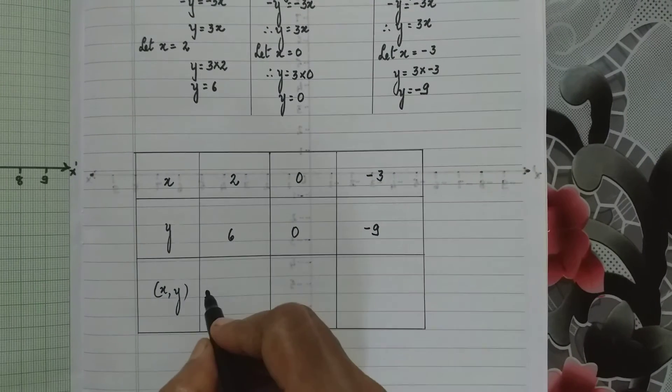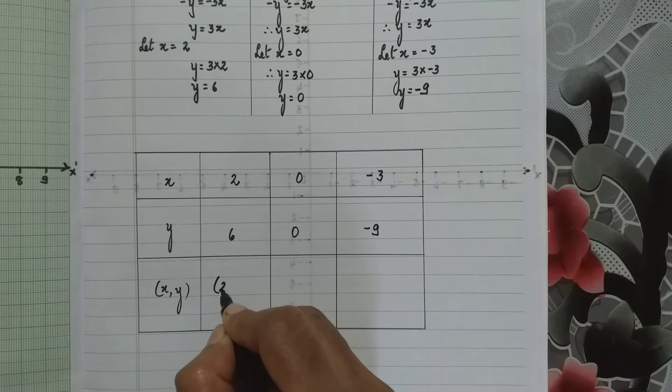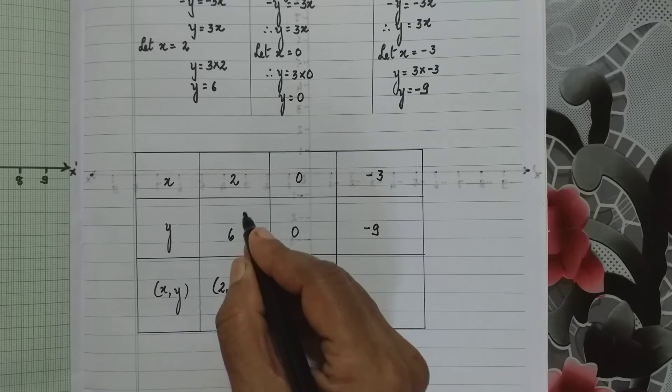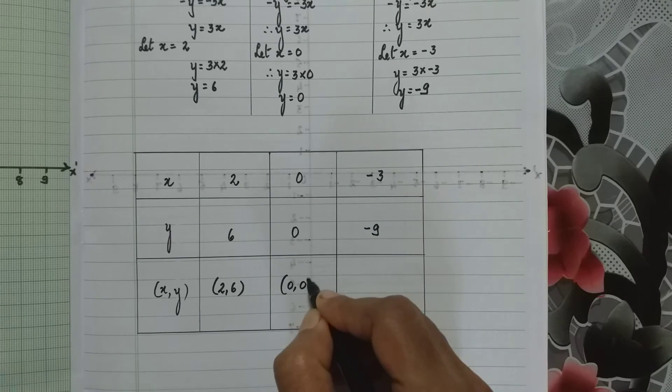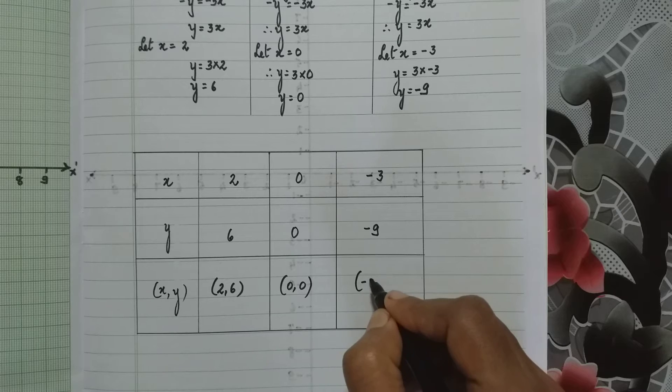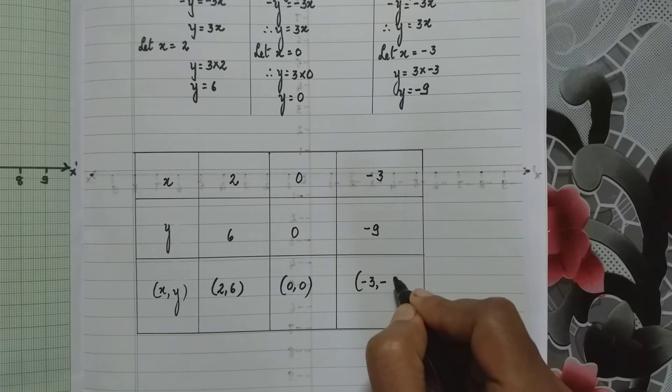So I have the coordinates now. Here I write the coordinates 2, 6. Then I have 0, 0. And here minus 3, minus 9.